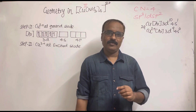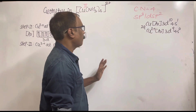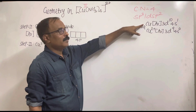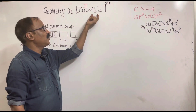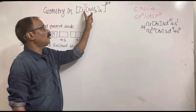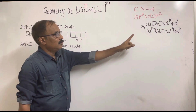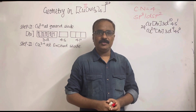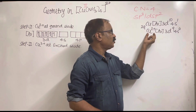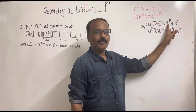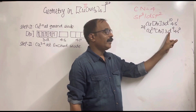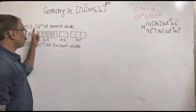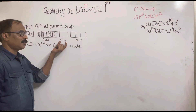We will check which one is correct. In this complex, copper is the metal, and the oxidation state of copper is +2 because ammonia is a neutral ligand. The electronic configuration of neutral copper is 3d¹⁰ 4s¹. For Cu²⁺, one electron is removed from 4s and one from 3d, giving the ground state configuration: 3d⁹ 4s⁰.